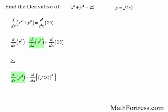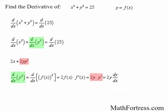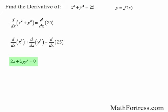The outer function is x squared and the inner function is f(x). Applying the chain rule, the derivative of y squared equals 2 times f(x) times the derivative of f(x). In different notation, this is 2 times y times y prime, or equivalently 2 times y times dy/dx. Here, dy/dx, y prime, and f'(x) are all just different ways of expressing the same idea. The derivative of the constant 25 is 0, so we end up with 2x plus 2y times y prime equals 0.